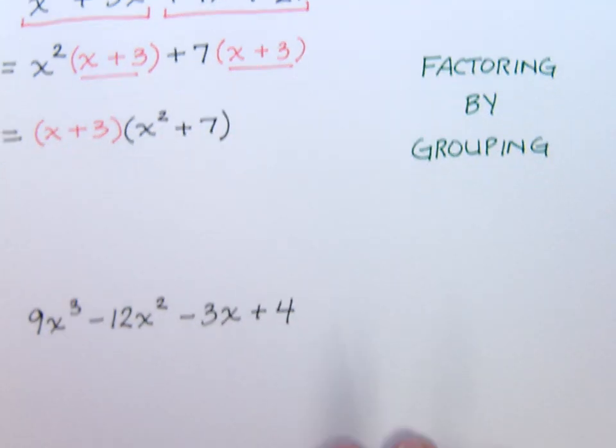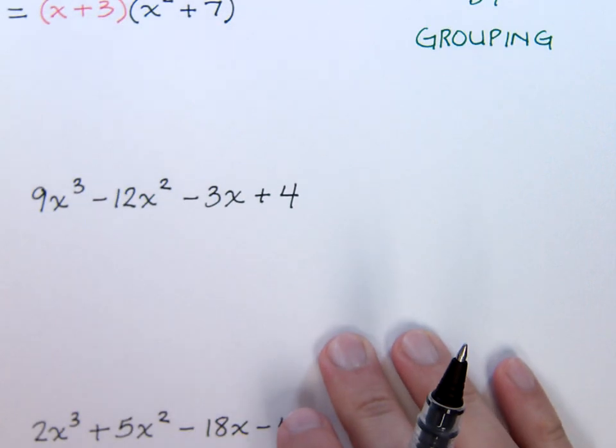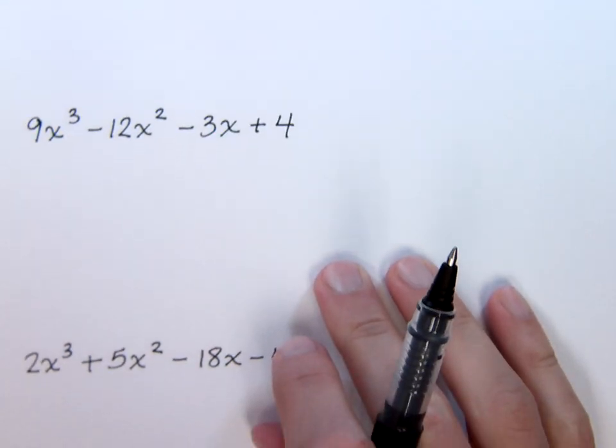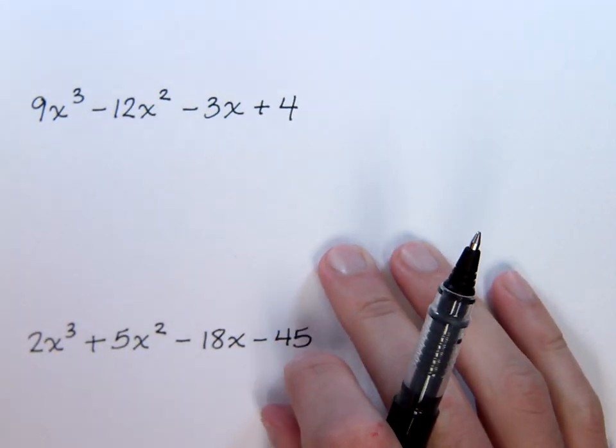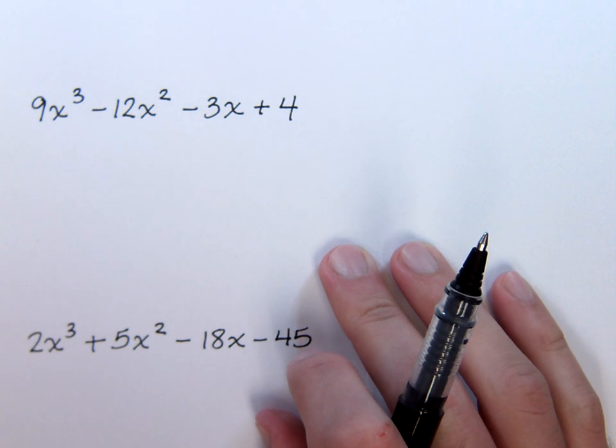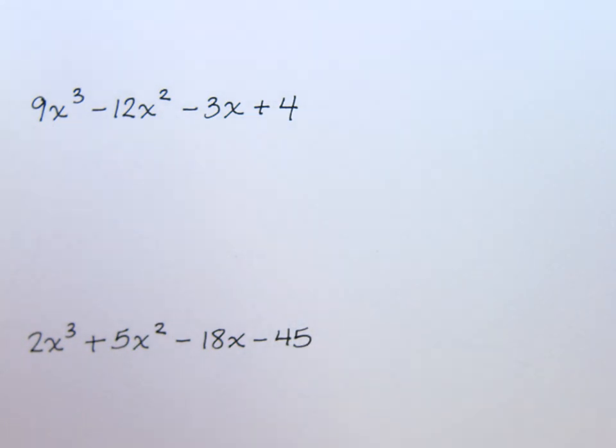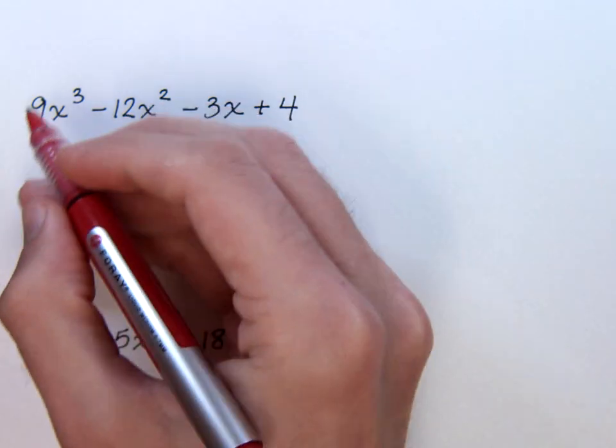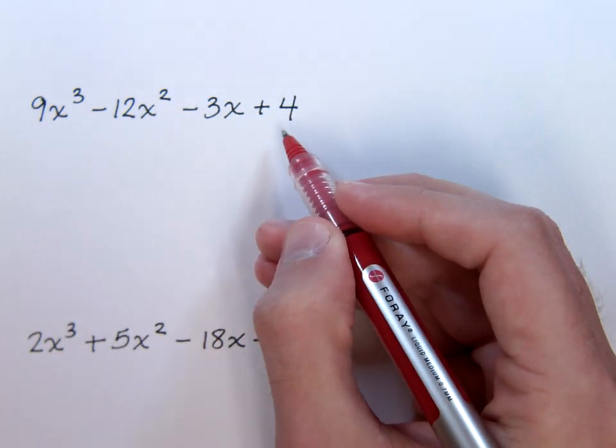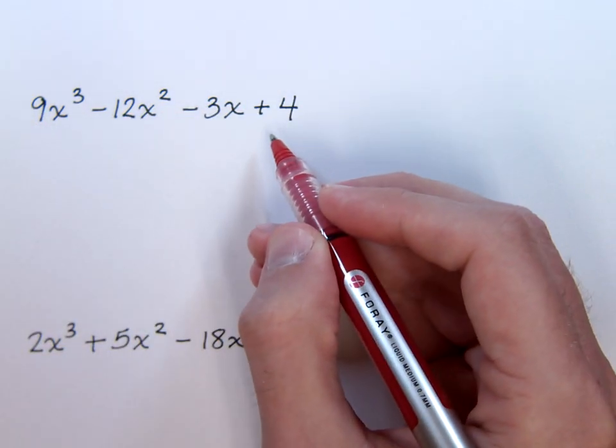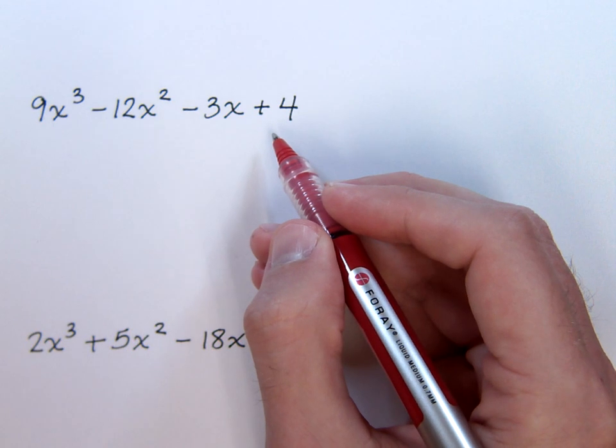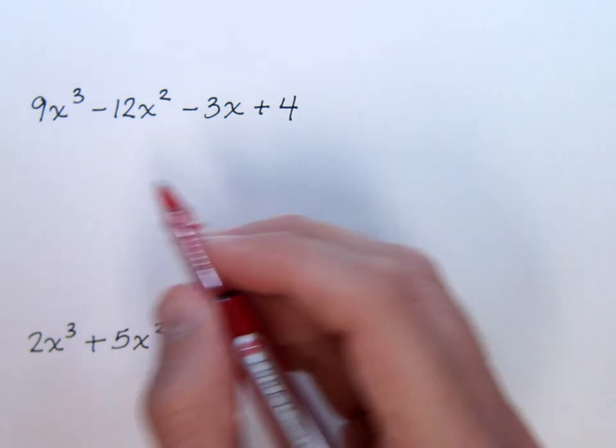Okay, let's look at another example. Here we have nine x to the third minus twelve x squared minus three x plus four. It's very similar to the last problem that we did. If we look at this whole problem, there is no greatest common factor other than one. So, that means we need to proceed to factor by grouping because we have four terms.